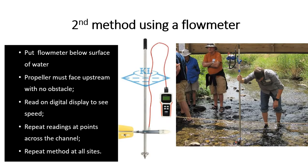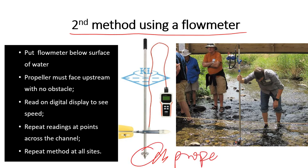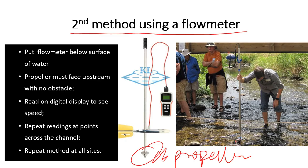The second method uses a flow meter. A flow meter has a propeller attached to it. Place the flow meter below the water surface and make sure it is facing upstream — since the river flows from upstream to downstream, the propeller must face upstream where there are no obstacles. Then read the speed of the river on the digital scale. Repeat readings at different points across the channel to obtain the velocity.